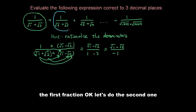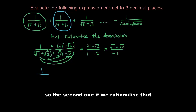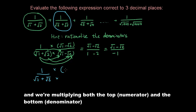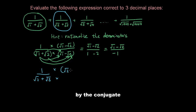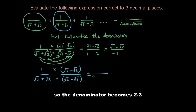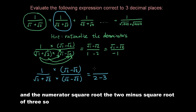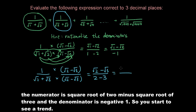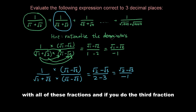Let's do the second one. If we rationalize the second fraction by multiplying both the top and bottom by the conjugate, the denominator becomes 2 minus 3, and the numerator is square root of 2 minus square root of 3. So the numerator is square root of 2 minus square root of 3, and the denominator is negative 1. You start to see a trend with all of these fractions.